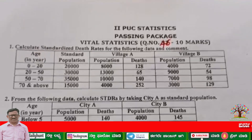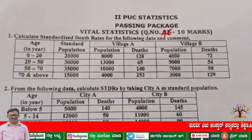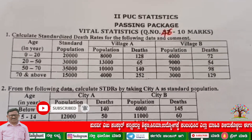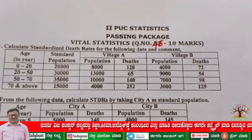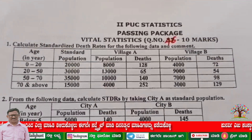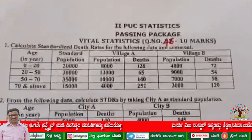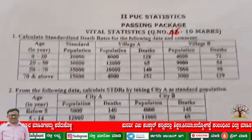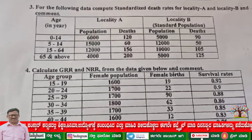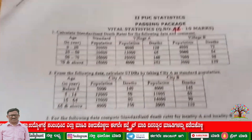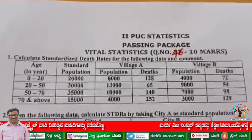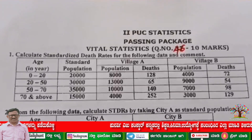Pausing package for the second PVC statistics. Let us start with the 10-mark question, question number 46. It is of 10 marks. The question may ask you to calculate STDR, or they may ask you to find out GRR and NRR. So let us start with the question calculating STDR — standardized death rates.